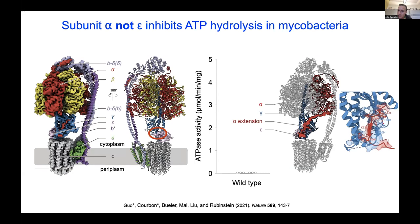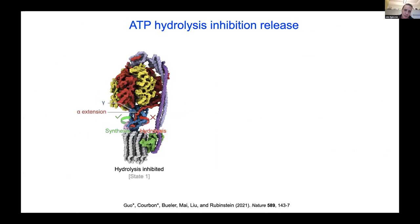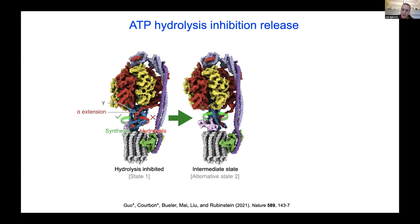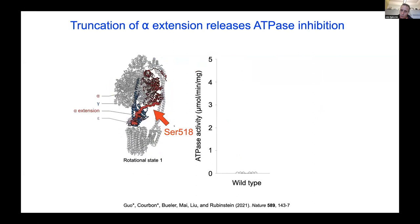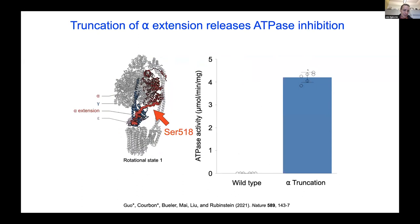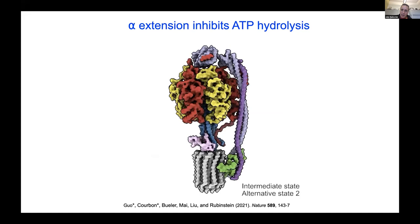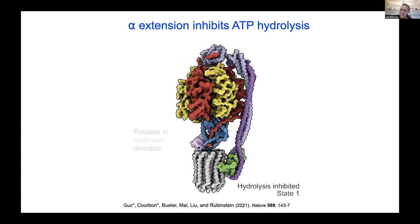Our model is that this alpha subunit extension acts like a rope — the rotor cannot turn in the hydrolysis direction because you can't pull or stretch a rope, but you can push one, so the rotor can turn in the synthesis direction. We also observed a rare conformation where that extension was bent back on itself, suggesting the rotor continues to turn and fully releases the extension so ATP synthesis can occur. Using molecular genetics, we truncated that extension and showed it restored ATP hydrolysis activity to the mycobacterial ATP synthase, confirming the model.